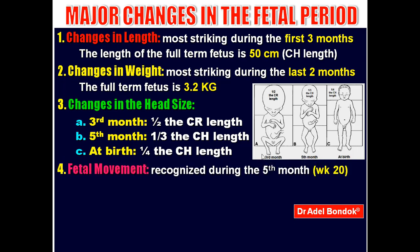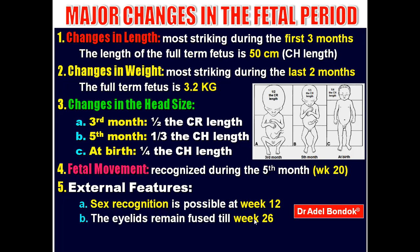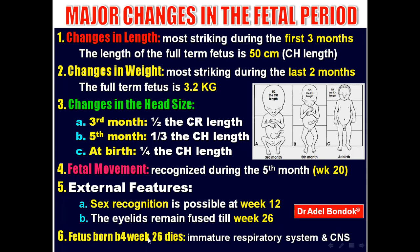Fetal movement is recognized during the fifth month, or week 20. Regarding external features, sex recognition is possible at week 12. The eyelids remain fused until week 26. A fetus born before week 26 dies due to immaturity of the respiratory system and the nervous system.